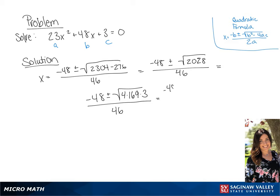So we have negative 48 plus or minus 2 times 13 times the square root of 3 all over 46.